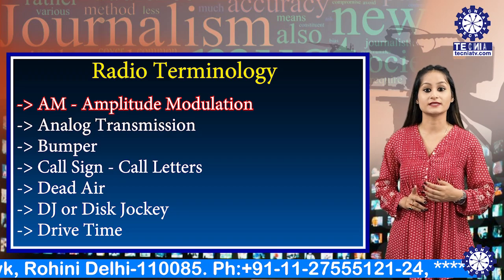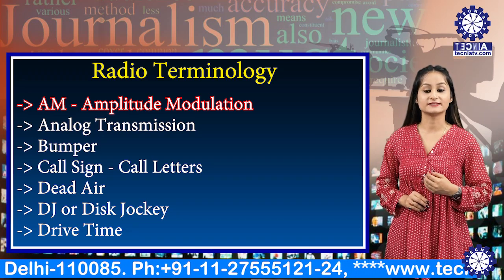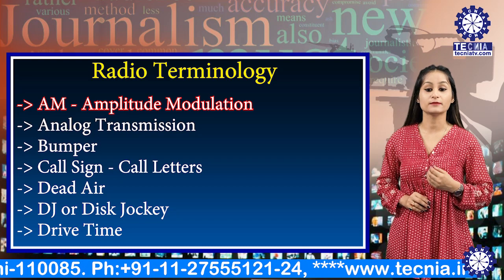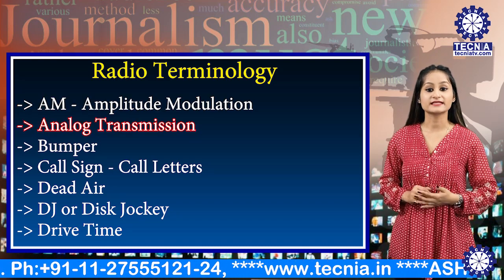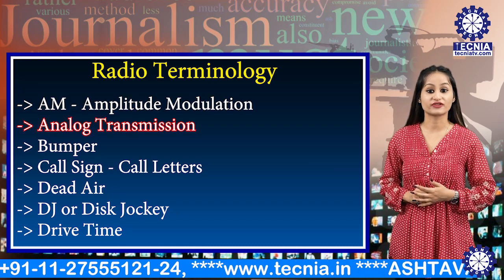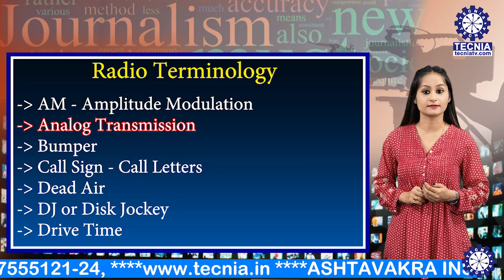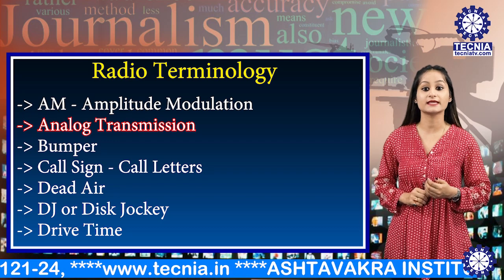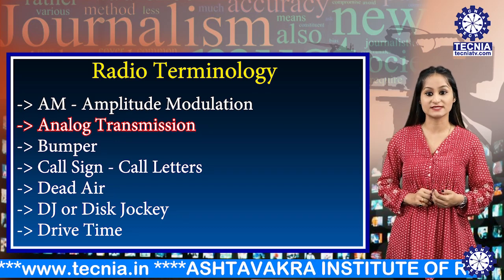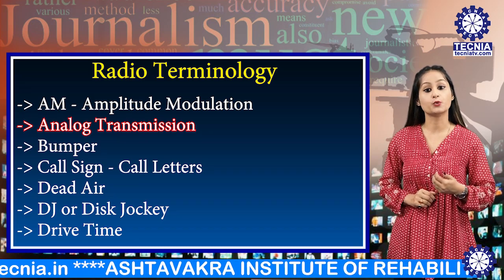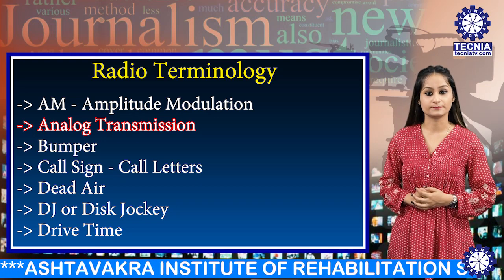The AM frequency range is 530 to 1710 kHz. Next is analog transmission, a continuous signal that varies in amplitude or frequency modulation, as opposed to a digital signal.